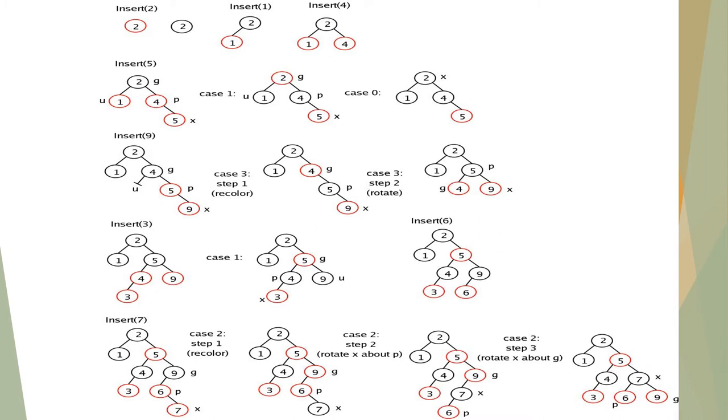Now let us see the example for red-black tree. Insert 2 — this is the first element. Next, insert 1. As 1 is smaller than 2, it is placed at the left side. According to the properties of red-black tree, the newly added node should be in red color and the root node should be in black color.